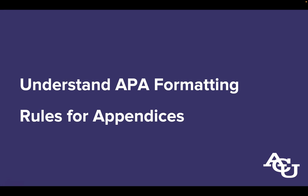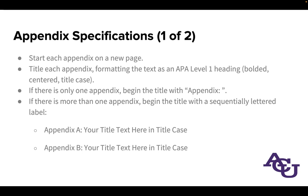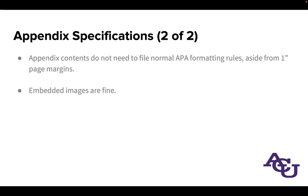Let's talk about the APA formatting rules for appendices. First, each appendix should start on a new page. It should begin with a title formatted using APA Level 1 heading rules — bold, centered, and in title case. If you have just one appendix, use 'Appendix:' followed by the title text. If there's more than one, letter them as Appendix A, Appendix B, etc., sequentially according to the order they appear, which is normally also the order they are cited.